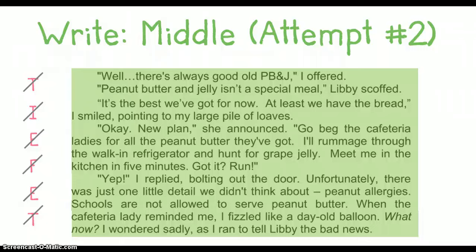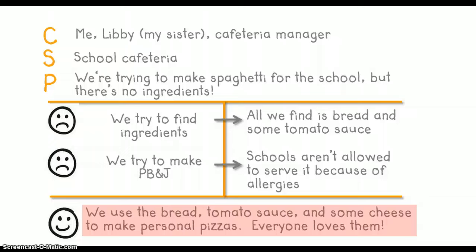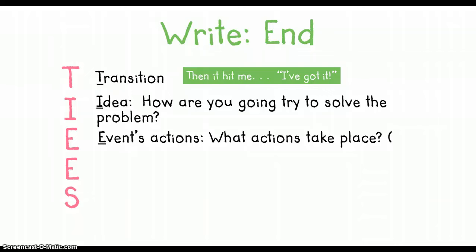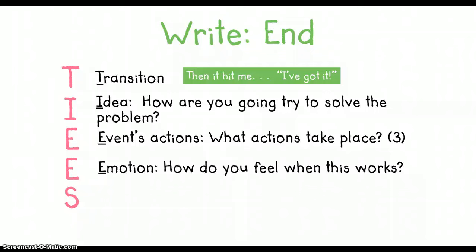Once I've completed this paragraph, I'm ready to move on and plan the fourth and final paragraph in my story about how we use the bread, tomato sauce, and some cheese to make the personal pizzas, and we solve this problem because everyone loves them. To write this, I can't use TIE-FET because this attempt works, it doesn't fail. So I'm going to use a different strategy to organize my solution called TIES. So when I write my solution, I'm going to start with another transition, and I want to be careful at this point because I don't want to use the same transition twice. Next, I'm going to state my idea. How am I going to try to solve the problem? After that, I'm going to include some events, actions. What actions take place? Then I need to show my character's emotion. How do I feel when this actually works? And I need to show the solution. How do I finally solve the problem? So let's look at this in action.